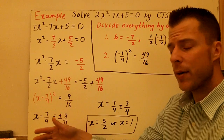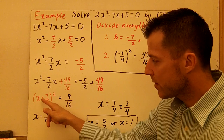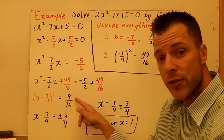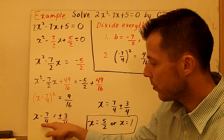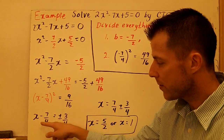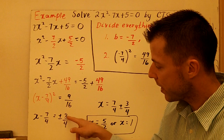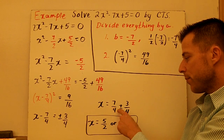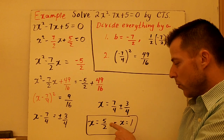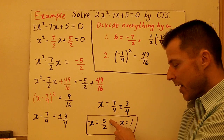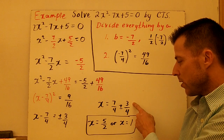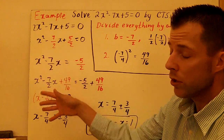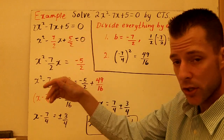Once you've gone through that process, this is a perfect square. You have x minus 7 fourths squared equals 9 sixteenths, and now we use the square root property. Square root both sides — x minus 7 fourths equals plus or minus 3 over 4. So x equals 7 fourths plus or minus 3 over 4, which is 10 fourths or 5 halves. And x could be 7 fourths minus 3 fourths, which is 4 fourths, which is 1. It's a little more challenging with an a value other than 1 — just divide out by a first.